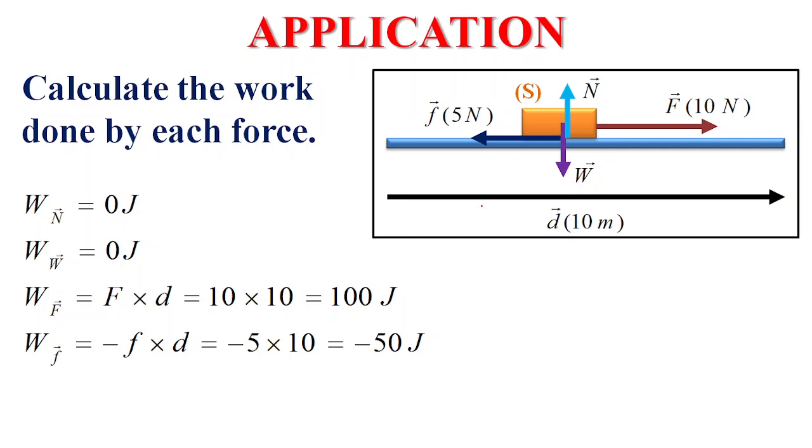Now, as we learned too, what are the forces that are perpendicular to the displacement? N and W. In this case, N and W are perpendicular to the displacement. Their work is zero. So the work done by N equals zero joules. Work done by weight equals zero joules, since N and W are perpendicular to the displacement vector.